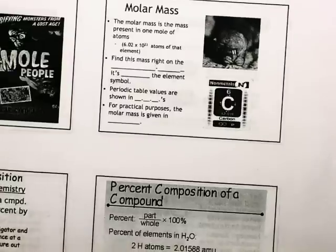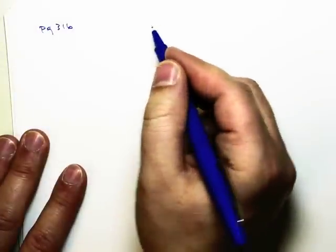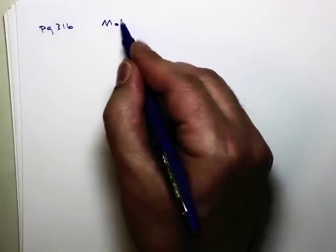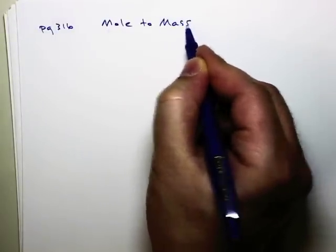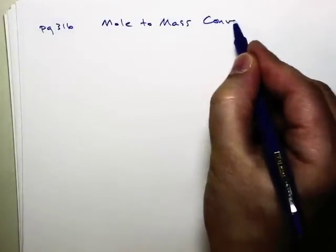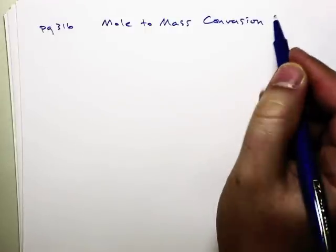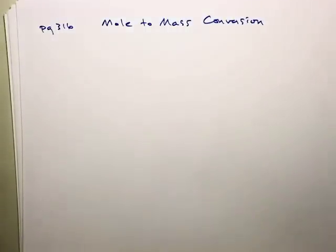So the next type of conversion problem is going to be found on page 316. And this is going to be called mole-to-mass conversion. And these are even easier than the last type we did. But you've got to have your periodic table out for these.